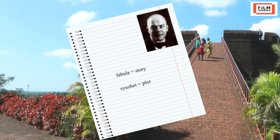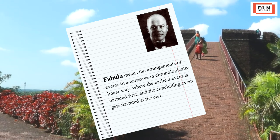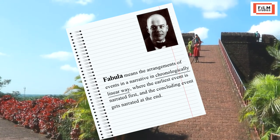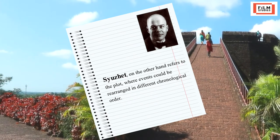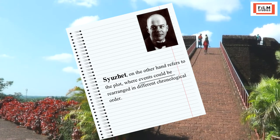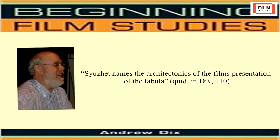Fabula means the arrangement of events in a narrative in chronologically linear way, where the earliest event is narrated first and the concluding event last. Sujet, on the other hand, refers to the plot, where events could be rearranged in different chronological order. David Bordwell says that sujet names the architectonics of the film's presentation of the fabula. So fabula is the narrative event and sujet is the peculiarly temporal description of the event, probably with temporal reshufflings. There are two basic types of temporal arrangements of the fabula in cinema: analepsis and prolepsis.